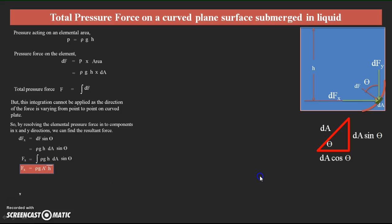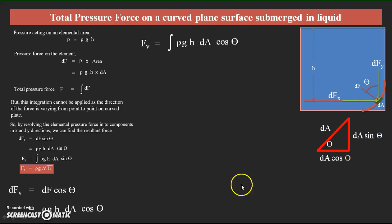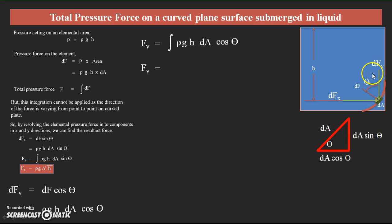Next, we derive the y component. dfy is equal to the adjacent component: dfy = df·cosθ. Substituting df = ρgh·dA, we get dfy = ρgh·dA·cosθ. Therefore, Fy = ρg·∫h·dA·cosθ. In this equation, h·dA·cosθ — specifically h·dA — becomes the volume of the liquid present over the curved surface.